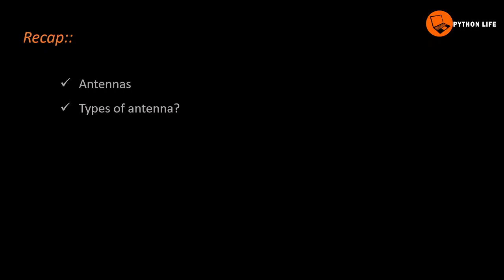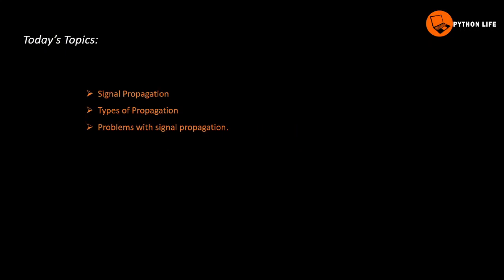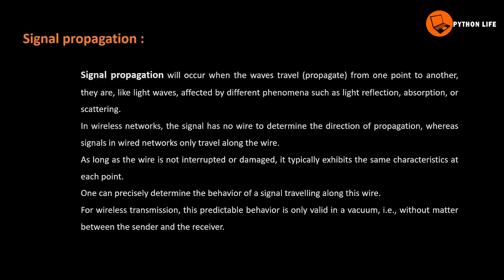We are going to talk about signal propagation. Signal propagation will occur when the waves travel from one point to another. They are like light waves, affected by different phenomena such as light reflection, absorption or scattering.